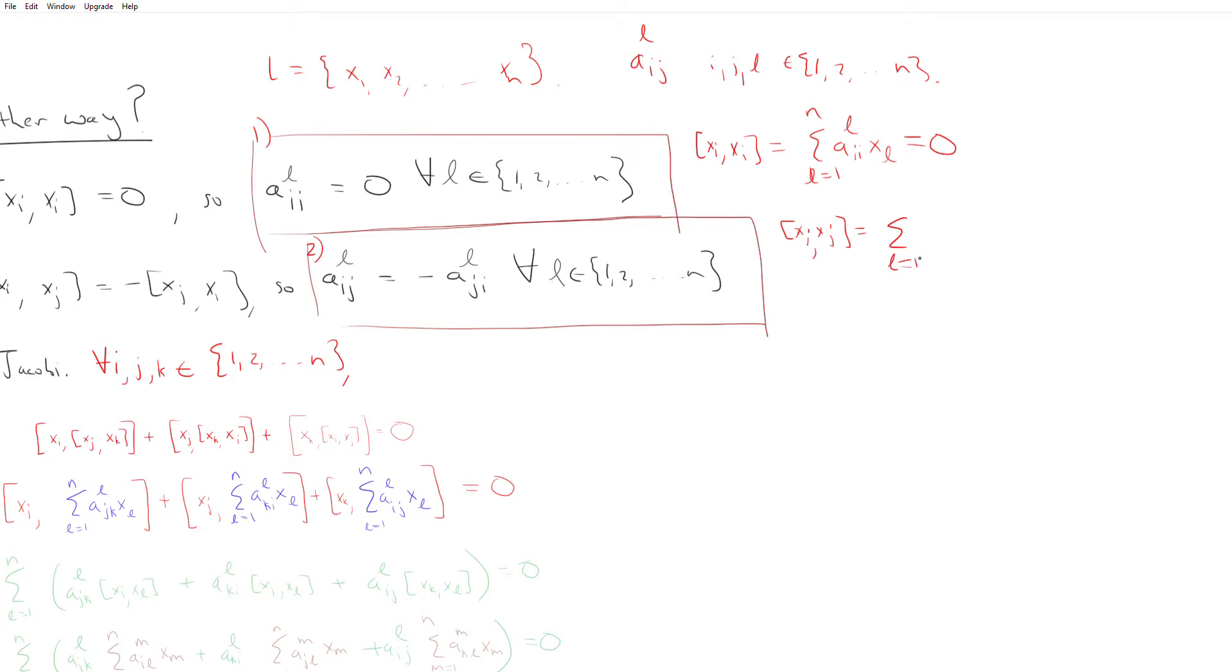this thing is equal to l equals 1 to n, a sub i j to the l, x sub l. And in the other direction, x sub j, comma, x sub i is equal to l equals 1 to n, a sub j i, l, x sub l.